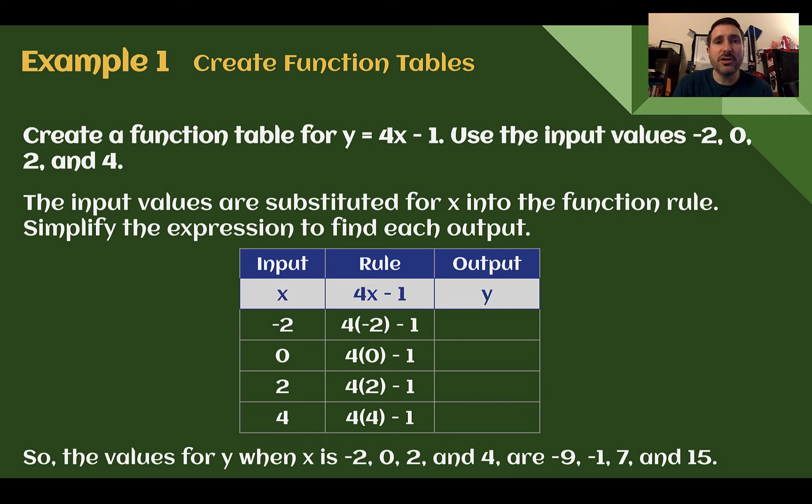Example 1, create function tables. Create a function table for y equals 4x minus 1. Use the input values negative 2, 0, 2, and 4. The input values are substituted for x into the function rule. Simplify the expression to find each output. So here they made a table set up for us. It told us what our input values were. We can see those are all listed right here. We made a row for each input. The rule, they just took our function up here, which was y equals 4x minus 1. The rule is actually what y was equal to, which is 4x minus 1. We need to do this in order to get y. So that's our rule.